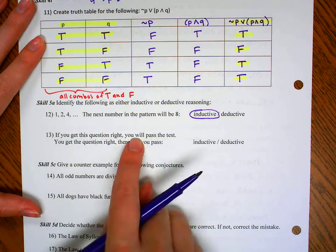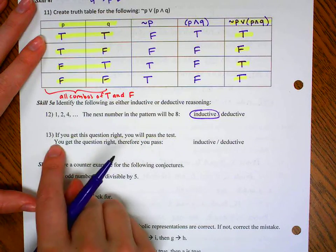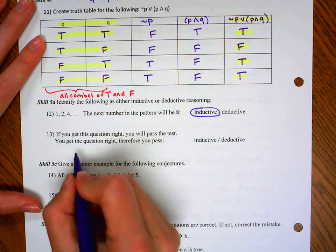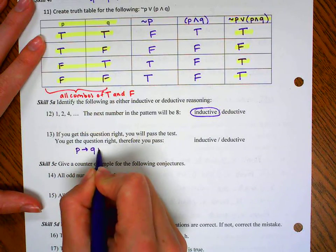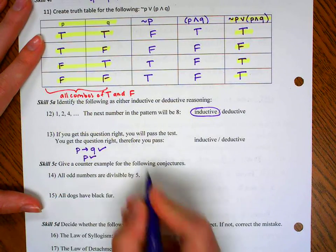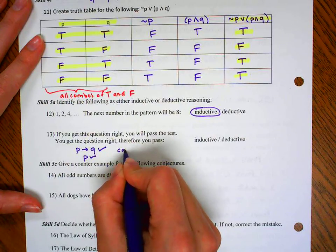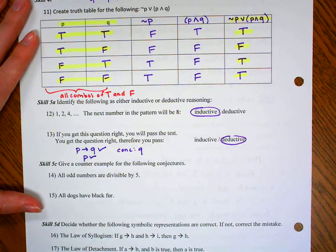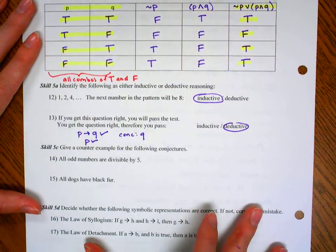Here it says, if you get this question right, you will pass the test. If you get this question right, you get the question right, therefore you pass. So what they're doing is they're saying we have a conditional statement. We're telling you that the first thing happened, so the conclusion was that the second thing happened. That's an example of deductive reasoning. That's the law of detachment.